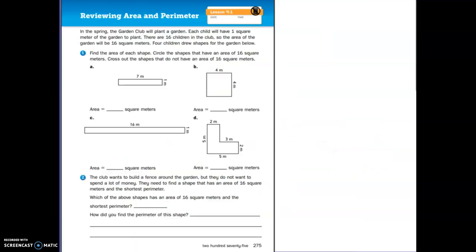When you're finished playing the game, here is a page in your math journal, page 275, where you are reviewing area and perimeter. Remember, the perimeter is the distance around the outside of the shape and the area is what's inside.